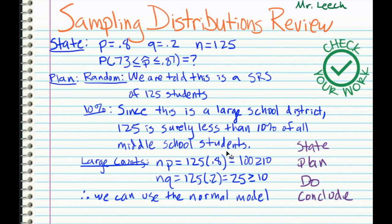It says within seven percentage points. So that's between 0.73 and 0.87. We have our three conditions here. We are told this is a random sample. And our 10% condition, since this is a large school district, 125 is surely less than 10% of all middle school students. And then we have our large counts. NP and NQ are both greater than or equal to 10. Make sure to give me some sort of numbers here. I don't just want to see NP is greater than or equal to 10. I need to see one of these two numbers here. The math would be probably the best if you were to just write one of them. With these three things being true, we know that our sampling distribution is going to be approximately normal.